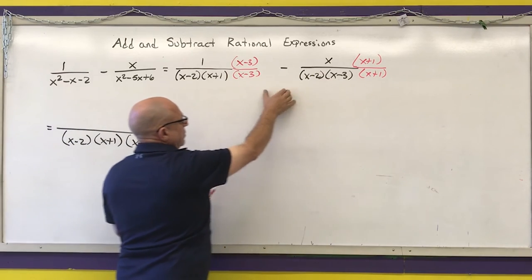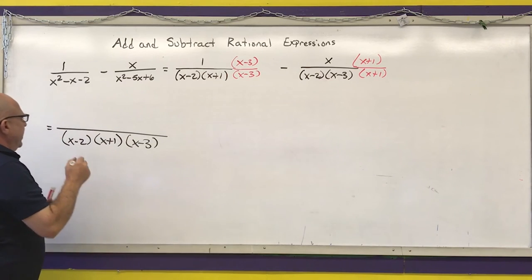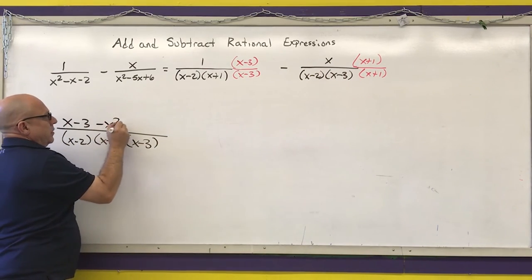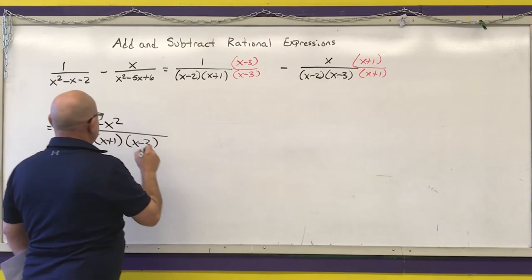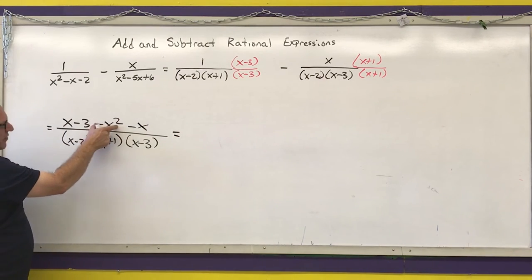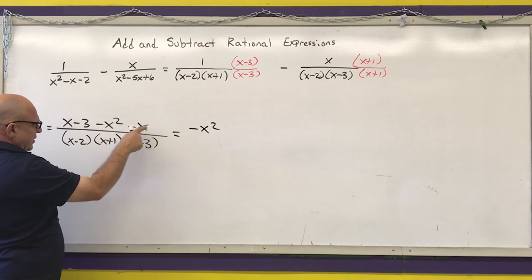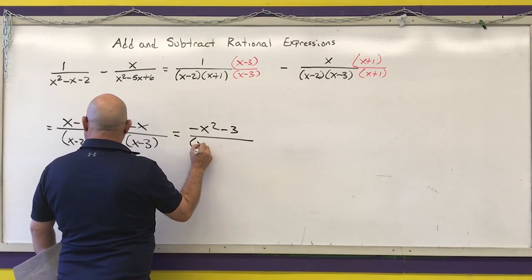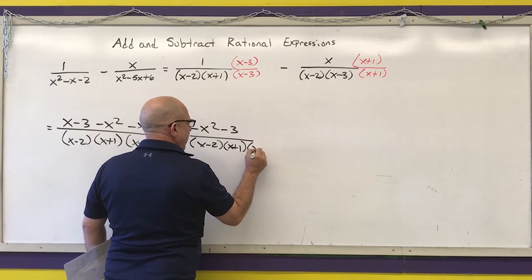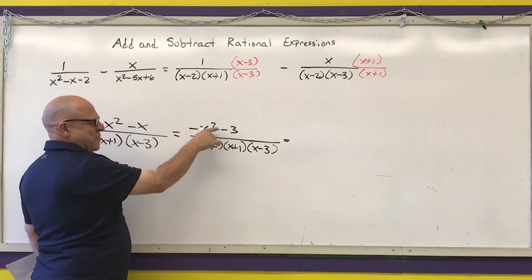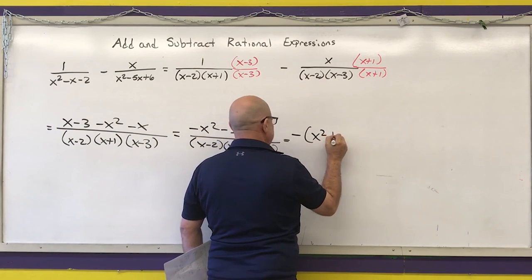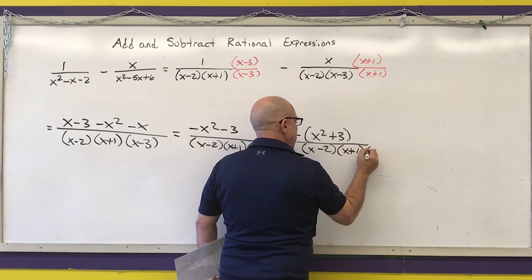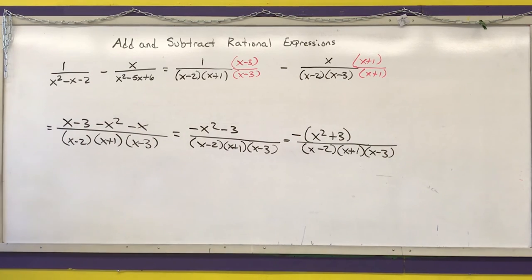Now do the multiplication in the numerators. 1 times (x minus 3) is just (x minus 3). Minus x times x is minus x squared; minus x times 1 is minus x. Combining like terms: I have negative x squared; x minus x is 0; and minus 3. That gives negative x squared minus 3 over (x minus 2)(x plus 1)(x minus 3). Pulling out the negative: negative(x squared plus 3), and since x squared plus 3 does not factor in the real number system, that is the final answer.